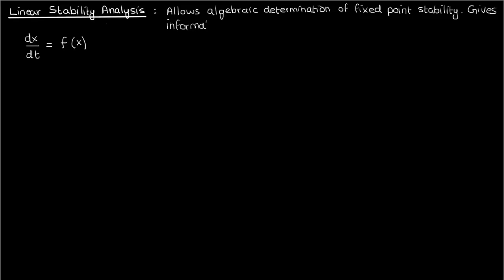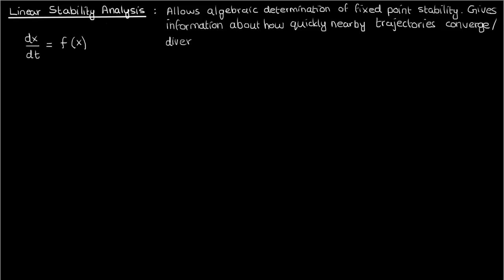Linear stability analysis is also useful because it provides information about how quickly nearby trajectories converge to or diverge from the fixed points. In linear stability analysis, what we do is expand f(x) around the fixed point and use the linear approximation to determine the nature of the fixed point. In other words, we linearize the expansion.